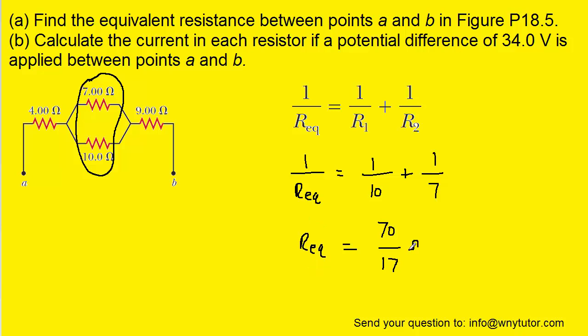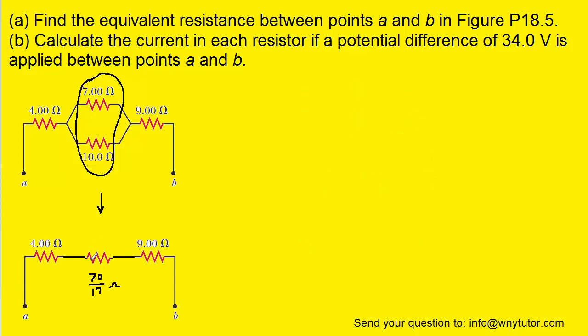And then the unit of the equivalent resistance would be ohms. So what we're going to do is take these two resistors, and we're going to combine them, in essence, and draw them as a single resistor whose resistance is 70 over 17 ohms. So there we have that equivalent resistor.